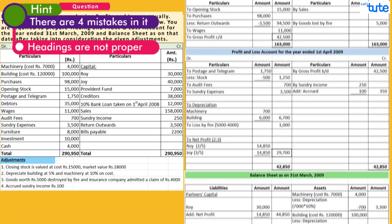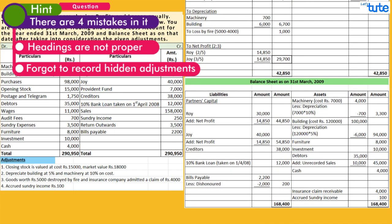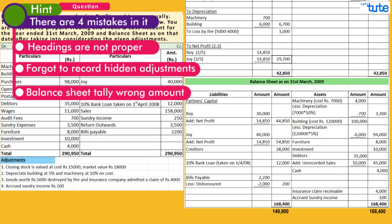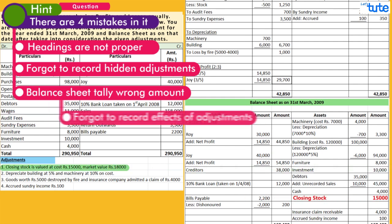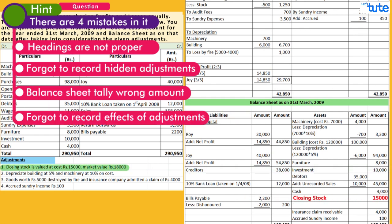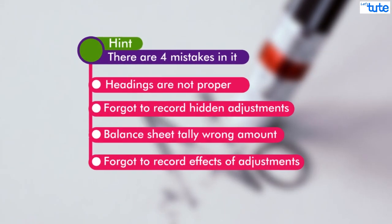Did you find them? First, the headings. Second, we have forgotten to record the hidden adjustment. Third, the balance sheet is not getting tallied but still returns the wrong amount. And fourth, the second effect of closing stock is missing. These are some common mistakes students make while solving partnership final account problems.